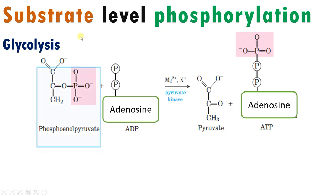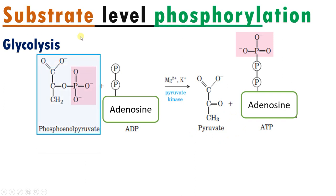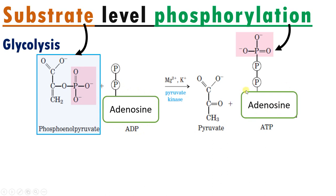Let's break down the term substrate level phosphorylation. In this reaction, the substrate is phosphoenolpyruvate, which carries a phosphate group. Phosphorylation is the addition of a phosphate to ADP — adenosine diphosphate — to form ATP, adenosine triphosphate.